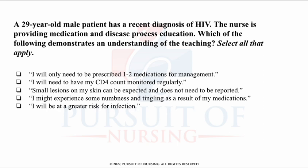This is a multiple response, select all that apply style question that will test your knowledge of physiological integrity. A 29-year-old male patient has a recent diagnosis of HIV. The nurse is providing medication and disease process education. Which of the following demonstrates an understanding of the teaching? Select all that apply. Go through the answer options — the accurate ones that demonstrate understanding are correct, and the others are false or inaccurate.